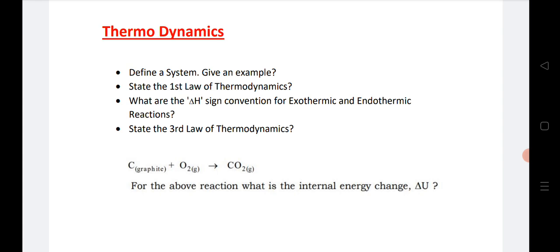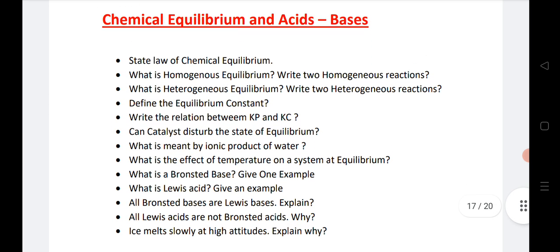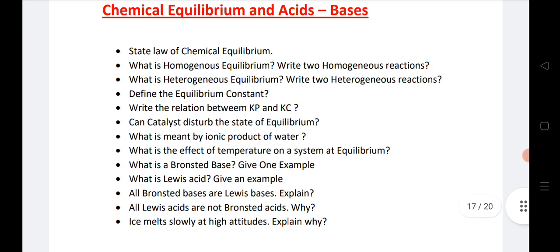Thermodynamics. Again, last question 'carbon plus O2 gives CO2' is from model paper. Remaining all are important. These all are important questions. Chemical equilibrium and acids and bases. All important questions we have listed. Very, very important ionic product. Normally so many times this question came—homogeneous, heterogeneous, Kp and Kc constant, and ice melts slowly at high altitude, Bronsted acid. These are very, very important questions.